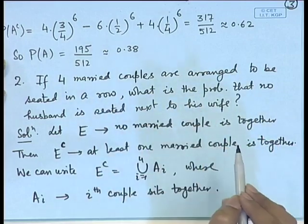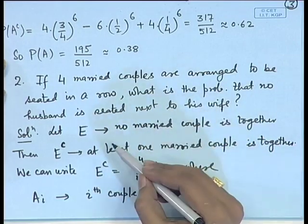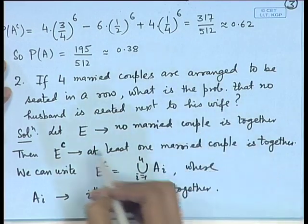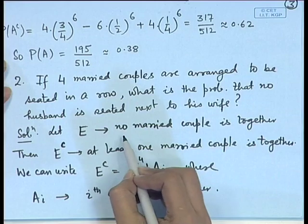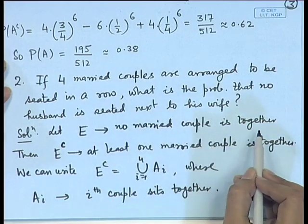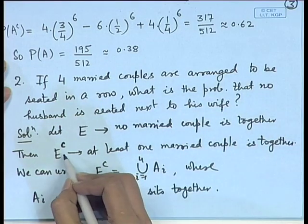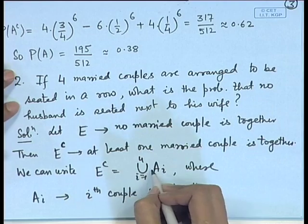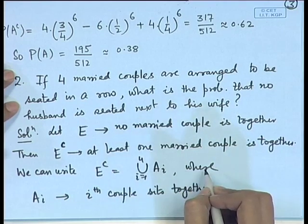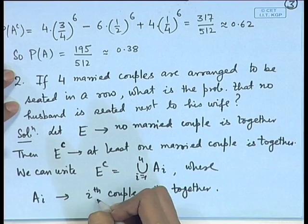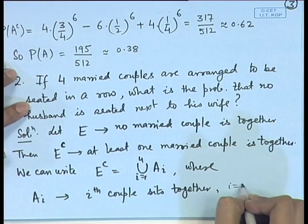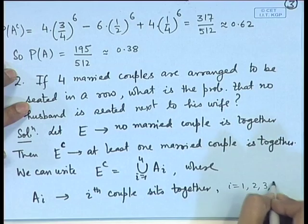We can simplify by using the complementary event and unions. Let event E be that no married couple is seated together. Then E complement denotes that at least one married couple is together. E complement can be written as the union of A_i for i = 1 to 4, where A_i denotes the event that the i-th couple sits together.